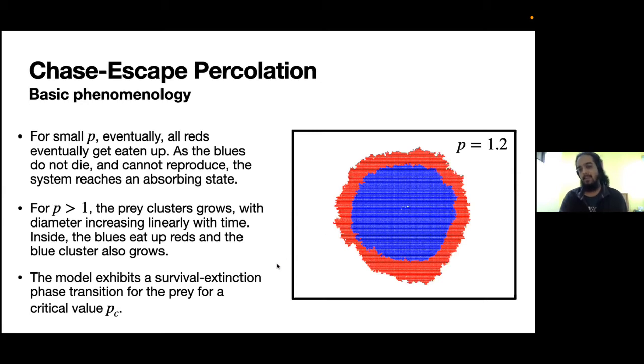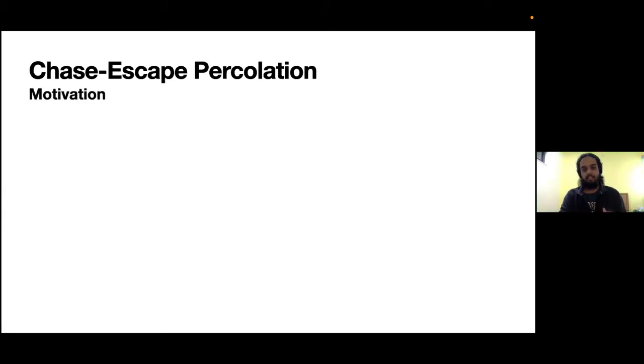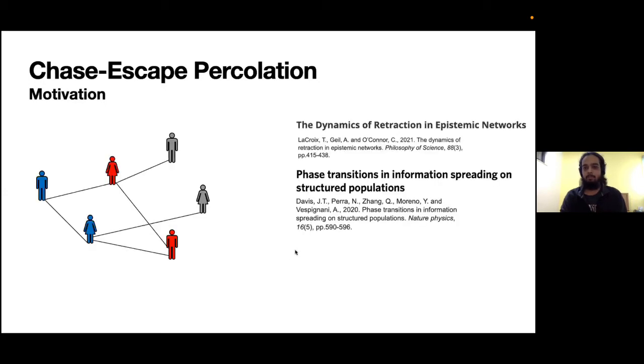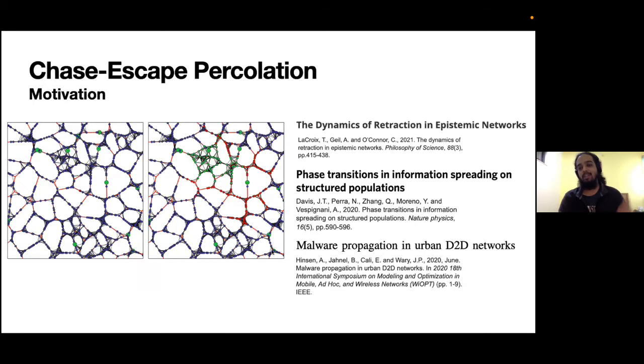These basic features of this model make it very attractive to capture a lot of real-world dynamics. Some examples where people have used Chase-Escape type models are towards understanding why retracted papers continue to be cited in epistemic networks, or why rumors continue to spread despite constant efforts to squash them. Another application comes in understanding how malware or viruses can spread in computer networks.